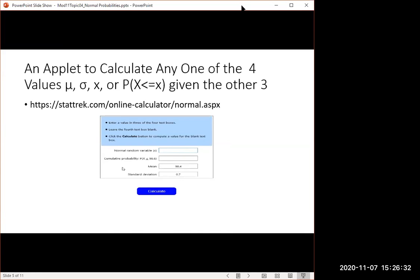Here's an applet that lets you find any one of these four numbers if you're given the other three. So let's think about human temperatures. I've typed in that the mean is 98.4 degrees Fahrenheit and the standard deviation is 0.7 degrees Fahrenheit. And if I want to find the probability that the temperature of a randomly selected person is less than 98.6, I would just type the 98.6 in here for the value of x, the value of the variable. And then I'll leave this one blank. And when I hit calculate, it'll fill in the missing number. So there, 61% of the people would have a temperature at or below 98.6 with these assumptions about the mean and standard deviation.